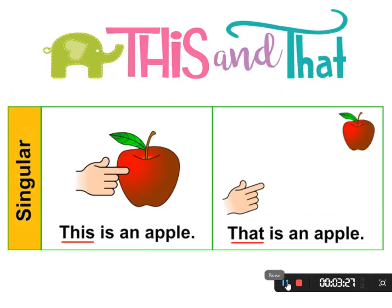وبكده بخلصنا الليسن بتاعنا النهارده وعرفنا الفرق بين 'this' و 'that'. Let's review: we use 'this' to point out a single thing, animal, or person that is near us — مفرد وقريب مننا. And we use 'that' to point out a single thing, animal, or person that is not near us — بعيد.